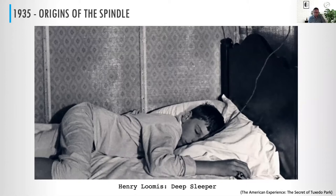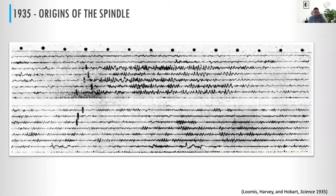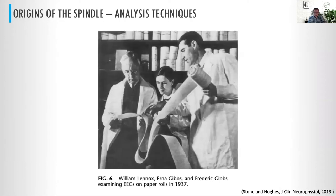Out of this polysomnography came actual recordings drawn from the drum recorder. We can see these EEG squiggles made by the pen. The state-of-the-art analysis of these signals was the human eye. It's really important to pause here and think about how much of the way we think about sleep is influenced by what people in the 1930s saw by eye in these sleep recordings.